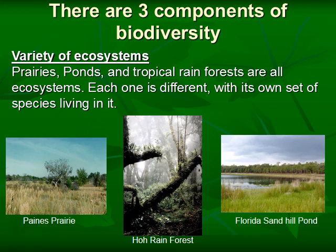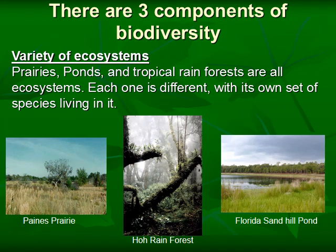Next is ecosystem diversity, which refers to different types of ecosystems that are present. Like what we discussed with biomes — there are different types of biomes representing diversity in ecosystems. The tropical rainforest is different from the taiga and the tundra. The same with the pond, which is different from a lake, river, stream, and the marine ecosystem.